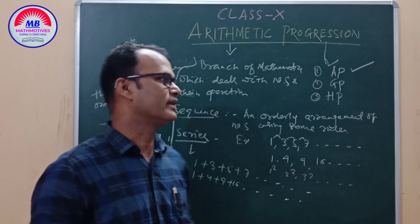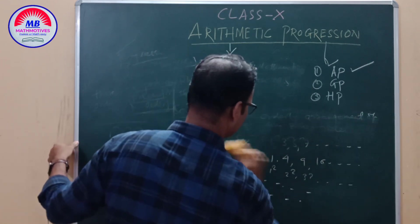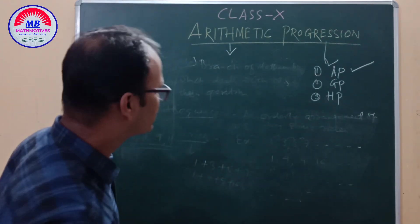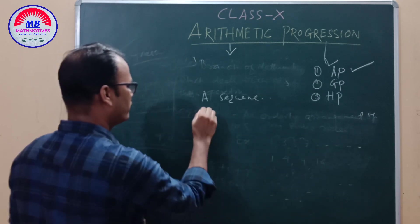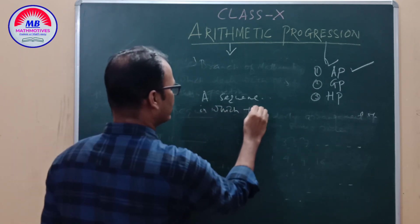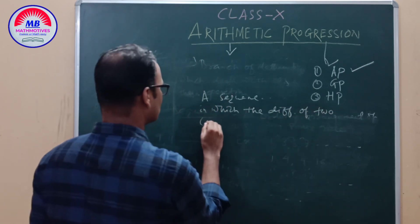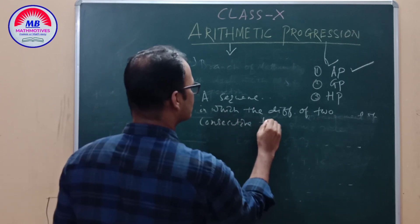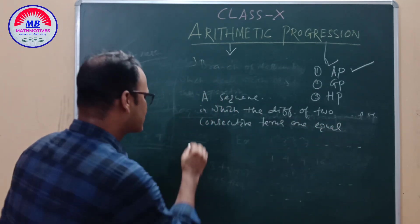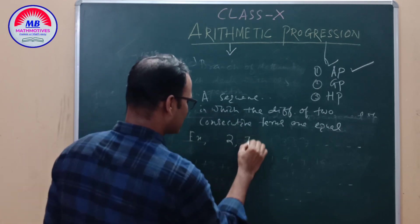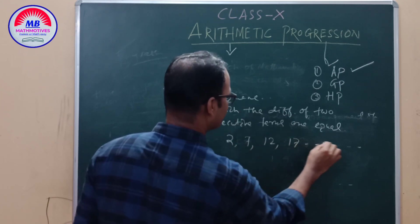What is an Arithmetic Progression? Arithmetic Progression is a sequence in which the difference between two consecutive terms is equal. For example: 2, 7, 12, 17 — the difference between two consecutive terms is constant.